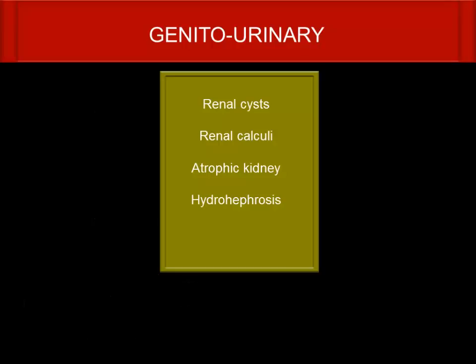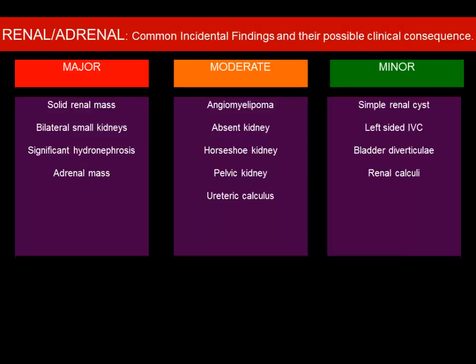For the genitourinary system, you need to look for renal cysts, renal calculi, atrophic kidneys, and hydronephrosis — these we see frequently. If it is a renal mass, you need to report it. Bilateral small kidneys will usually be known if the patient is elderly or has renal failure. For significant hydronephrosis affecting drainage, it is better to inform; for an adrenal mass, further investigation is needed.